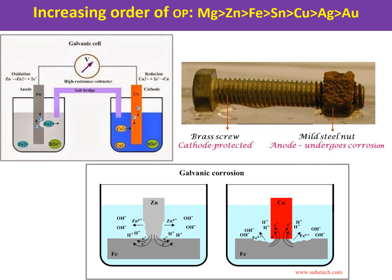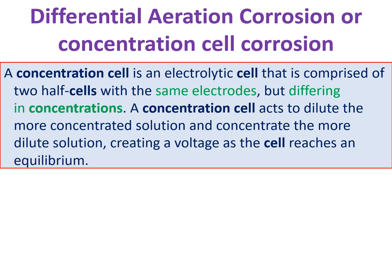The decreasing order of oxidation potentials: magnesium has the highest, followed by zinc, then iron, and so on — always remember this order. In the galvanic series, alloys like brass screws and mild steel screws are also included. Mild steel has higher oxidation potential than brass, so mild steel corrodes. In a galvanic cell with zinc and copper, only zinc dissolves as Zn²⁺; copper is not destroyed. So only zinc is involved in corrosion while copper remains safe.